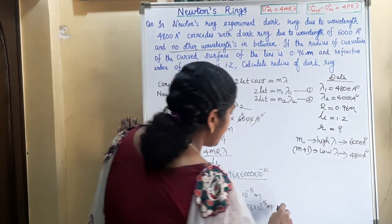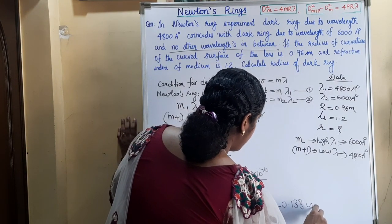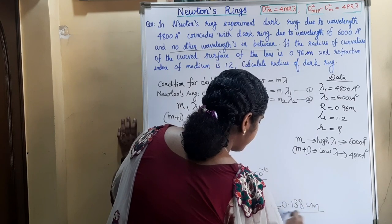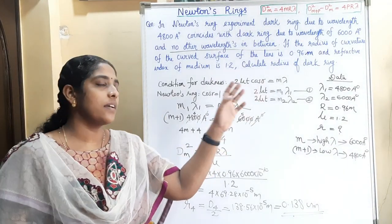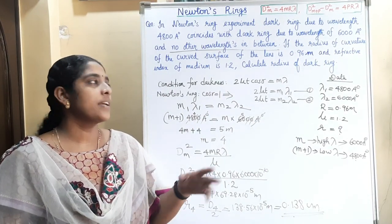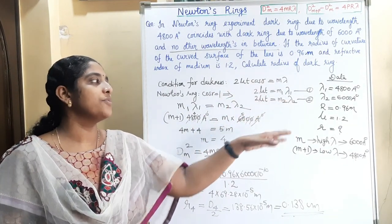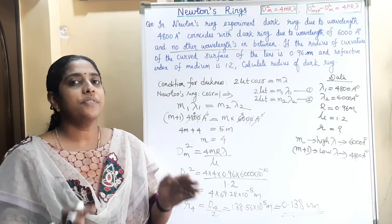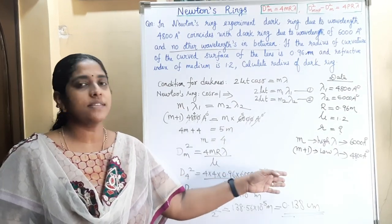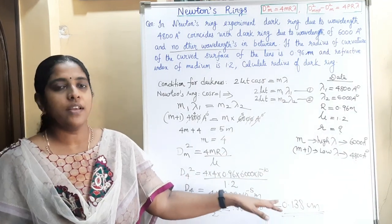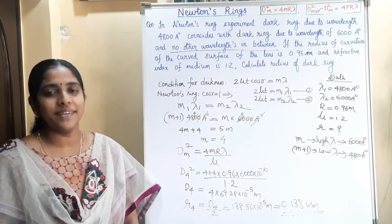The radius of the dark ring is 138.56 × 10⁻⁵ m, or equivalently 0.138 cm. To summarize: when dark rings due to two wavelengths coincide with no wavelength in between, we write 2μt = m₁λ₁ = m₂λ₂, with orders m and m+1, where m corresponds to the higher wavelength and m+1 to the lower wavelength.